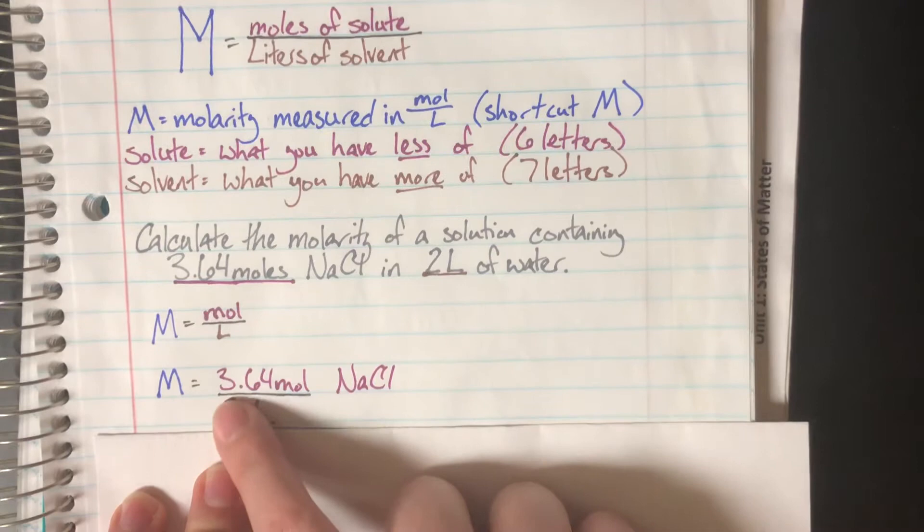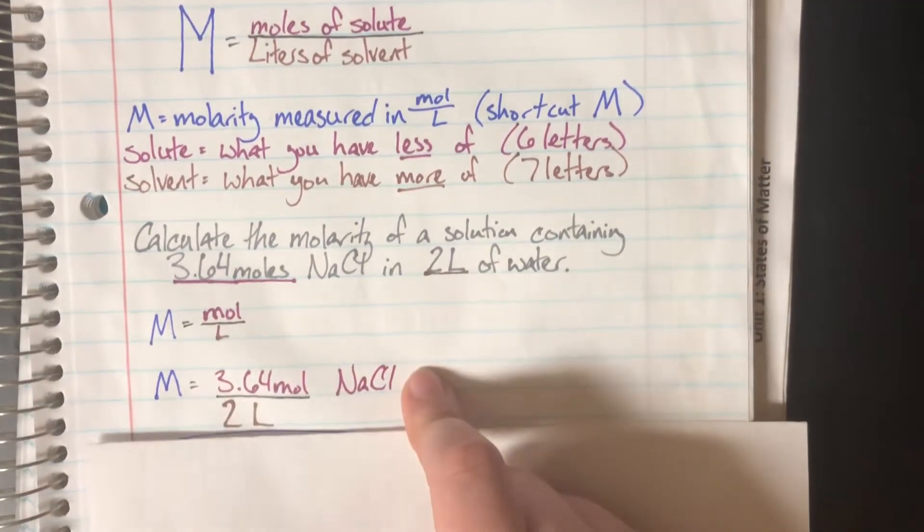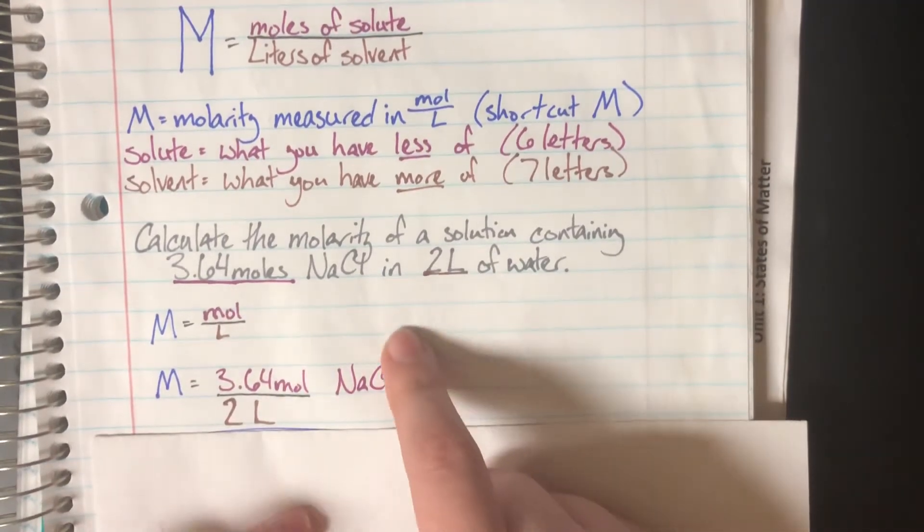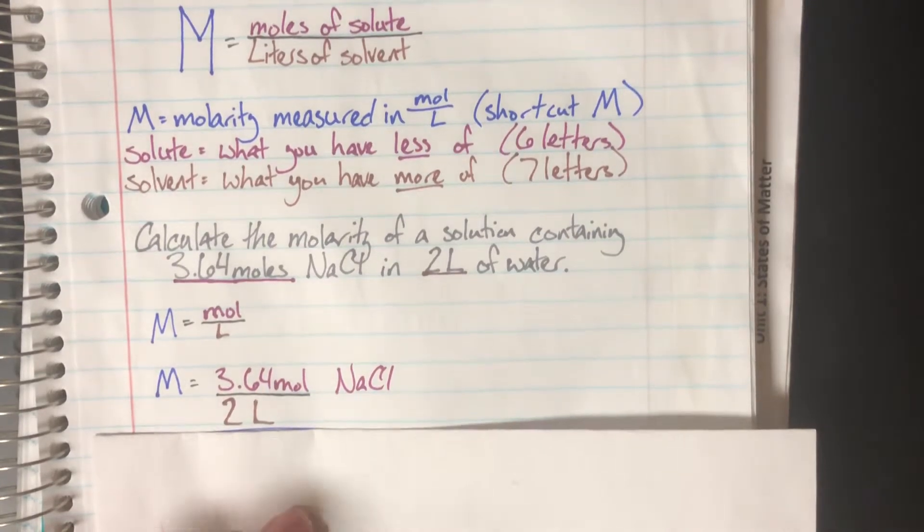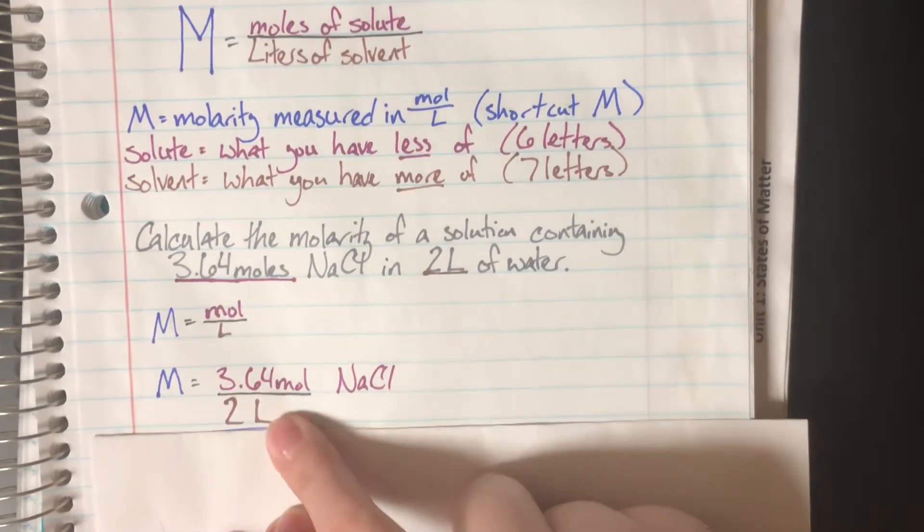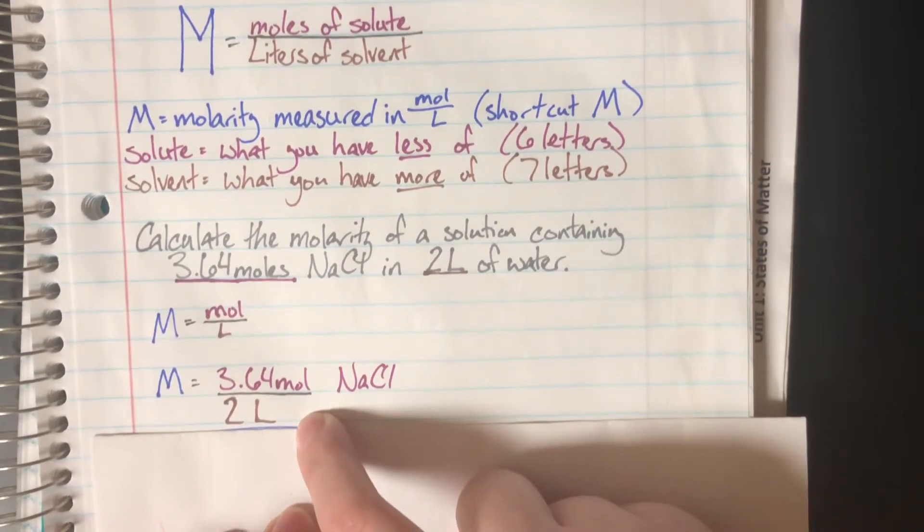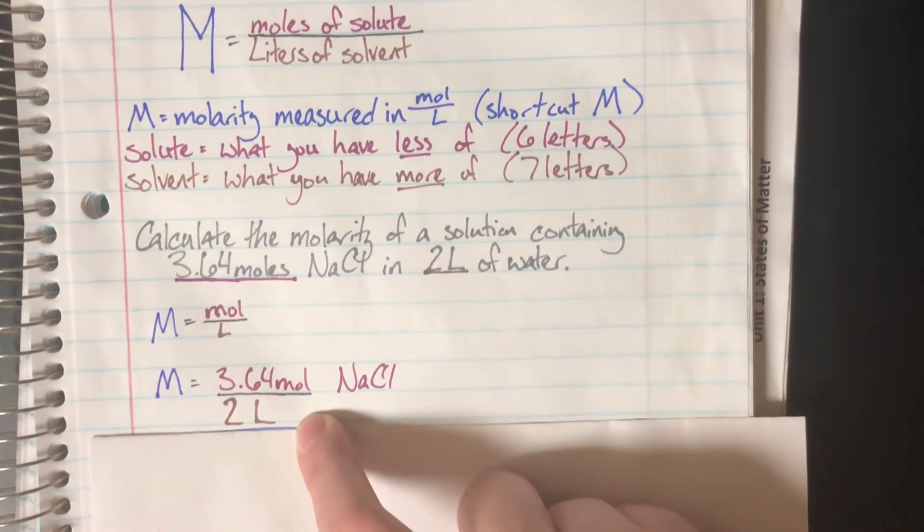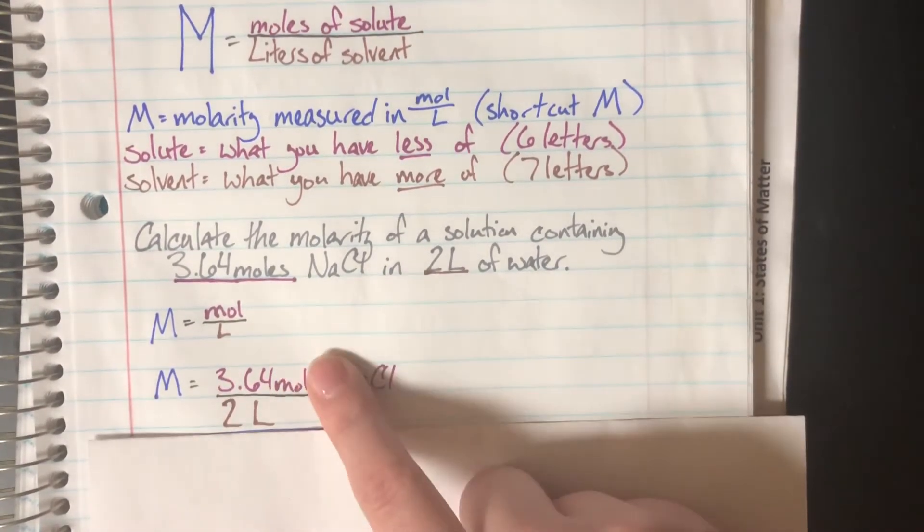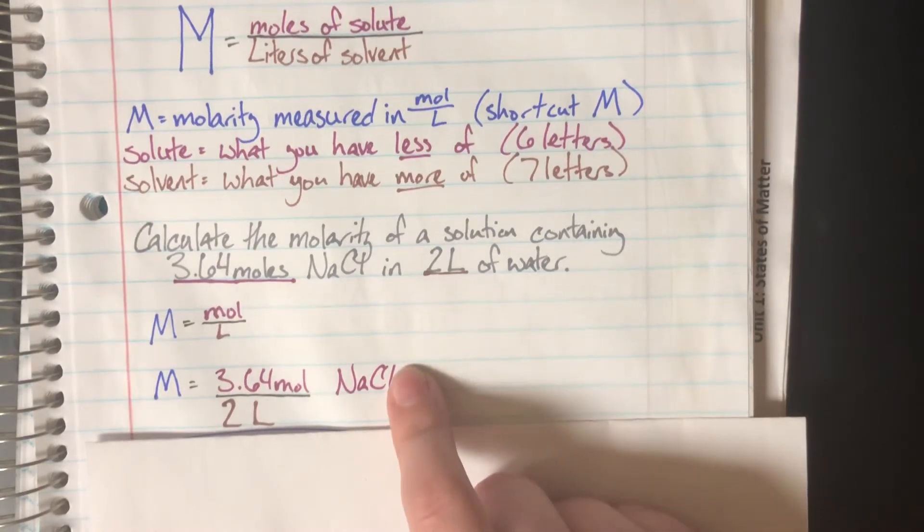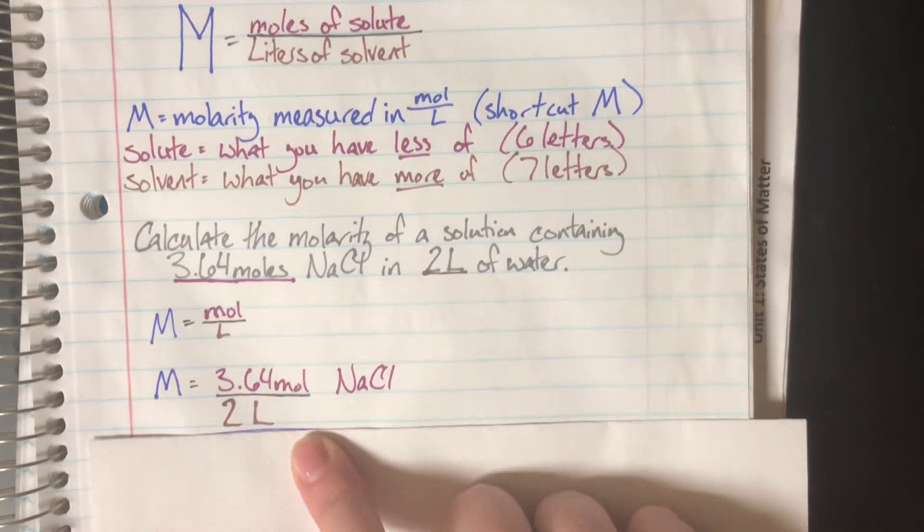I have 3.64 moles—this is my solute. Since my solute is sodium chloride, I'll keep track of that because it's important to know what the solution is made of. The solvent is less important since it's normally not part of any reaction. I have my moles of solute (sodium chloride) and my liters of solvent. When I divide 3.64 by 2, I get 1.82 moles per liter sodium chloride.